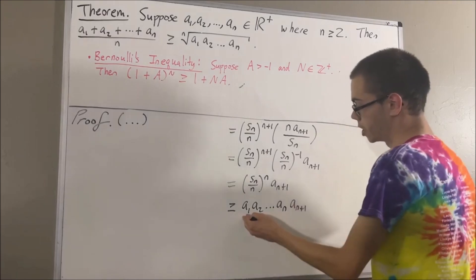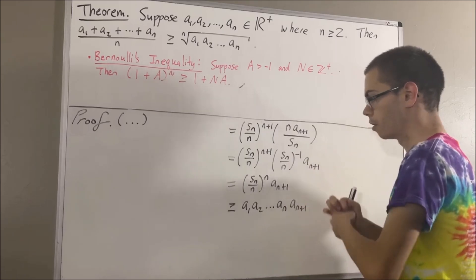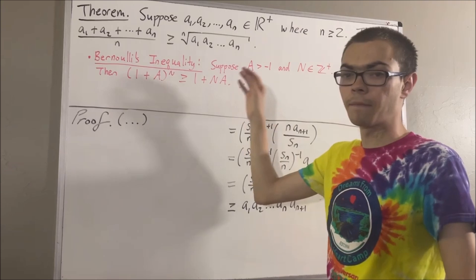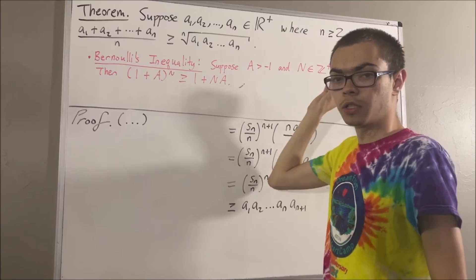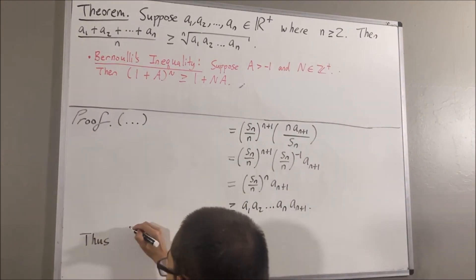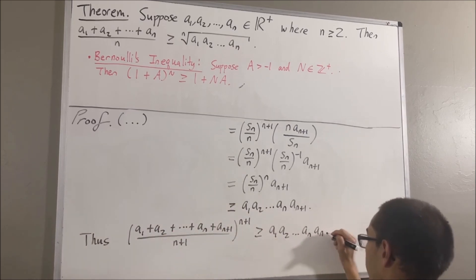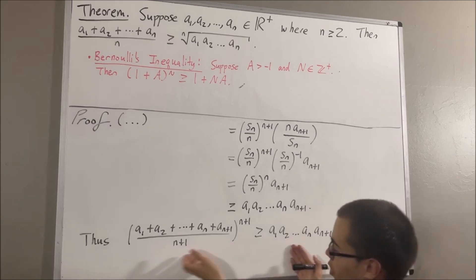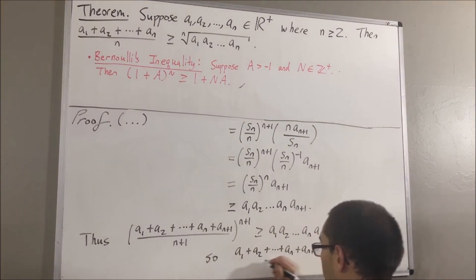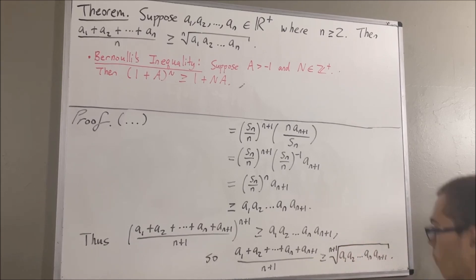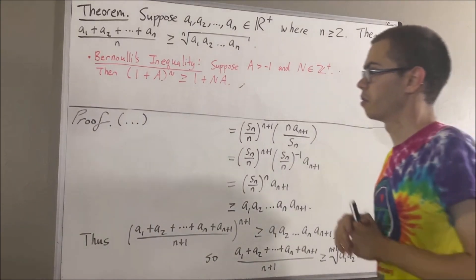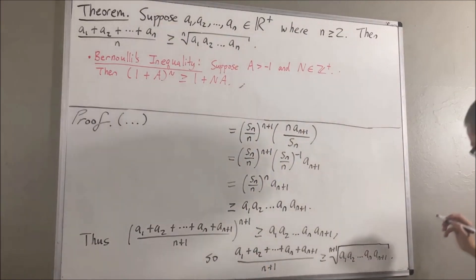So, we have established a long chain of equalities and inequalities. At the very beginning, we had the arithmetic mean of the n plus 1 terms to the power of n plus 1, and we have shown it's greater than or equal to the geometric mean to the power of n plus 1. Since these are both positive, we take the n plus 1 root of both sides of this inequality, and we get that the arithmetic mean is greater than or equal to the geometric mean. So, this completes the induction step. Because we've completed both the base case and the induction step, this closes the induction. And so, we have proven the theorem. This completes the proof.